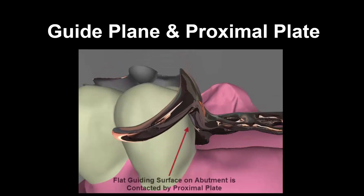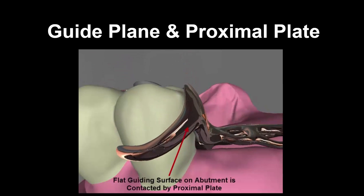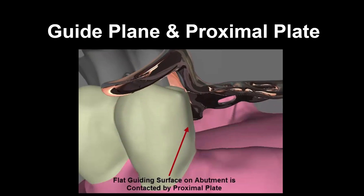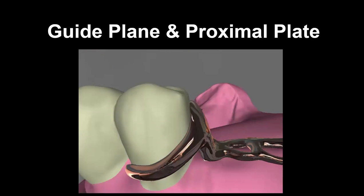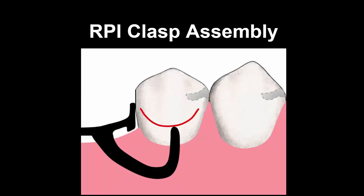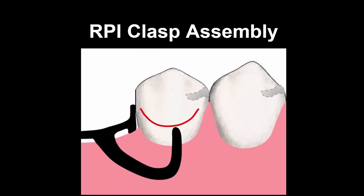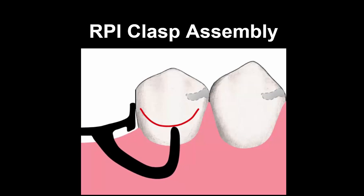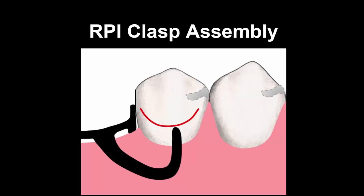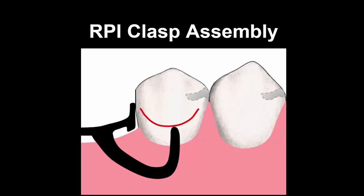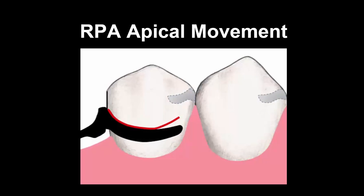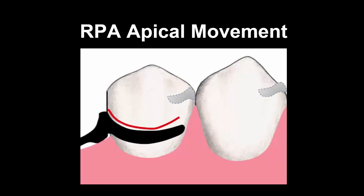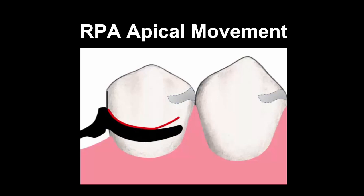You can see a guide plane with the proximal plate portion of the framework contacting that guiding plane and guiding the removable partial denture into place. There are many clasp assemblies that animations have been created to show how those particular assemblies function and the various components compared to the red survey line. Here we can see an RPA where the entire clasp assembly is located apical to the survey line.